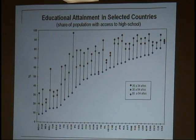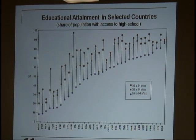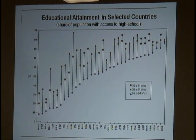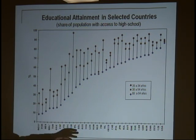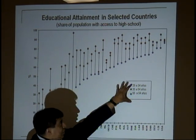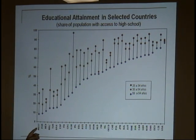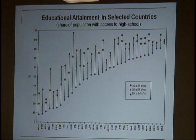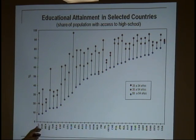Let me show you something about education. This is data from the OECD — the share of population with access to high school, meaning that they have at least one year of high school. These are three cohorts: 25 to 34, 35 to 54, and 55 to 64 — to see how access to tertiary education levels has changed over the years. It's ranked by those with the highest level, starting with the USA, down to the lowest, which is Indonesia.